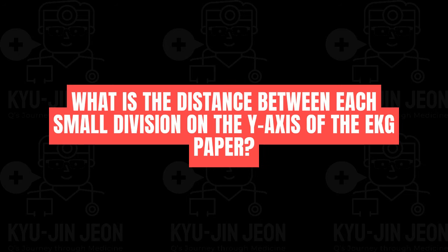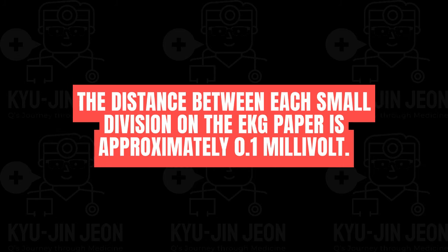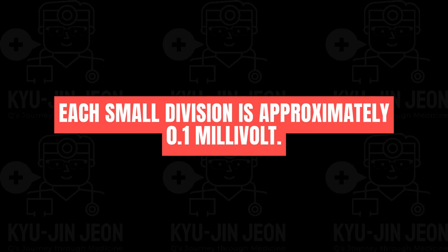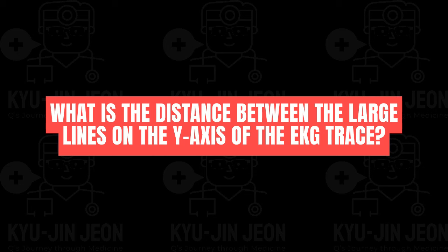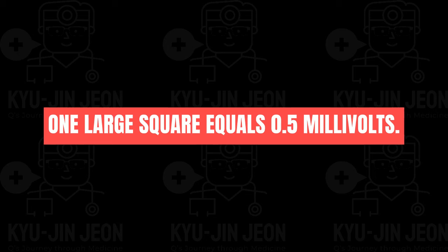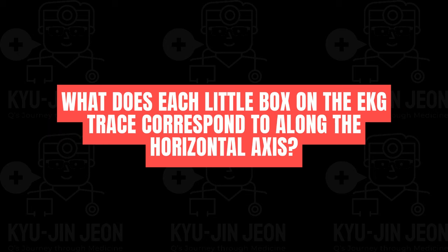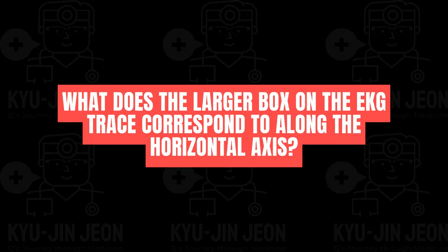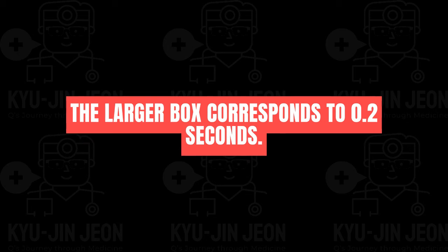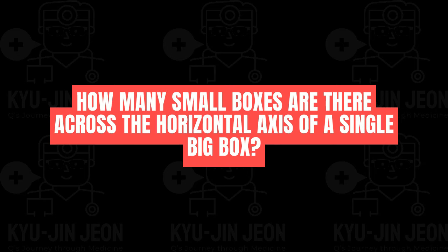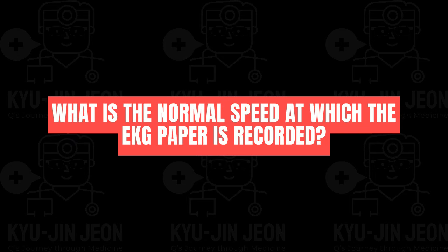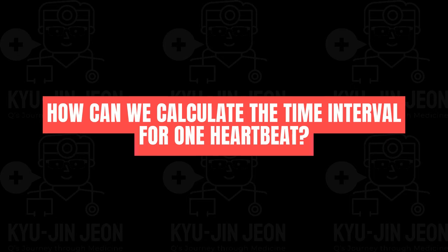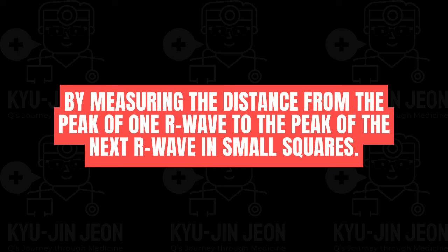On EKG paper, the distance between each small division on the y-axis is approximately 0.1 millivolt, and one large square equals 0.5 millivolts. Along the horizontal axis, each little box represents 0.04 seconds, while each larger box corresponds to 0.2 seconds — there are five small boxes across one big box. The EKG paper is recorded at a normal speed of 25 millimeters per second. Heart rate can be calculated by measuring the distance from the peak of one R wave to the next in small squares.